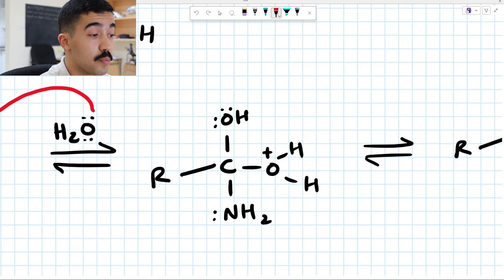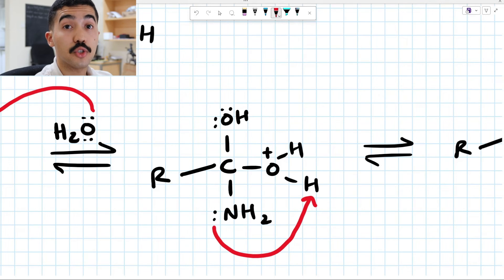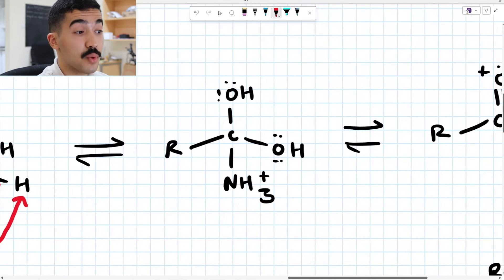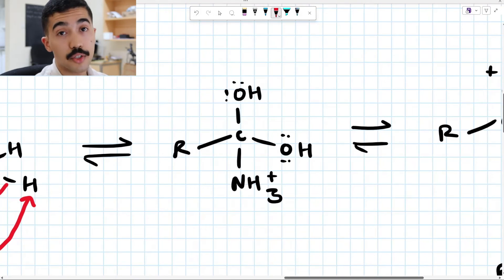So how are we going to kick out this NH2 group? Well, what we want to do is we're going to have these lone pairs over here come in and remove this hydrogen from the OH2 plus group that just entered the system, if you will. These electrons are going to collapse towards oxygen and we're going to end up with the following. We're going to have NH3 plus and we're going to have two OH groups.